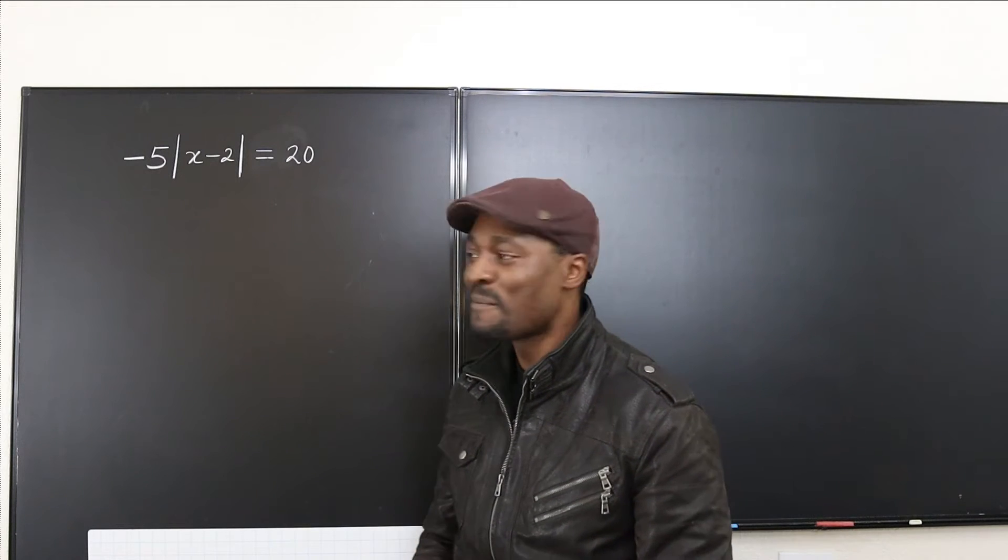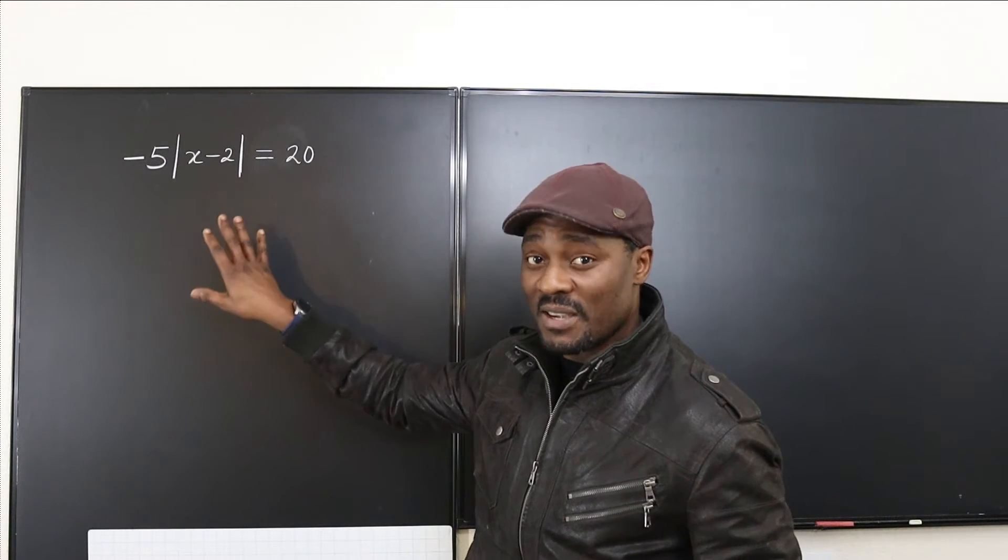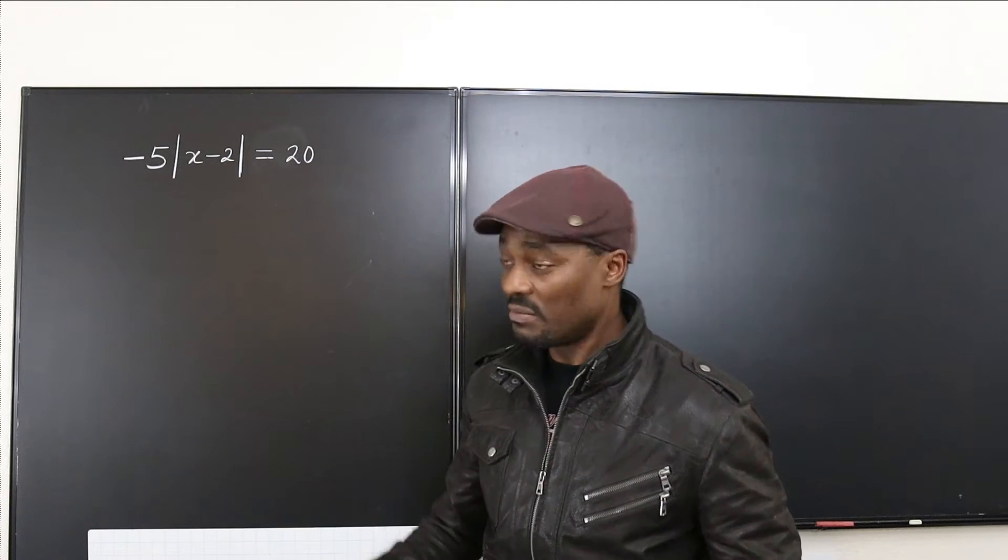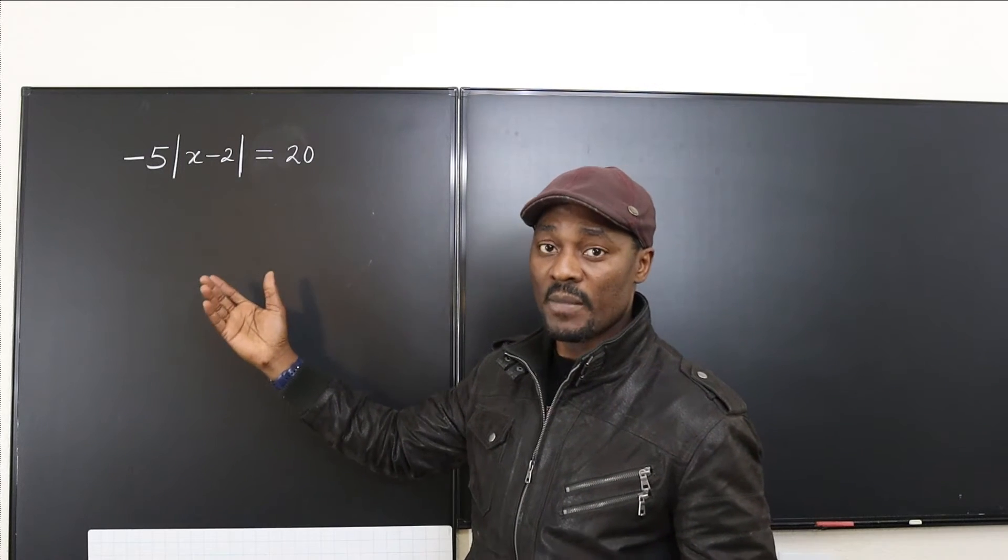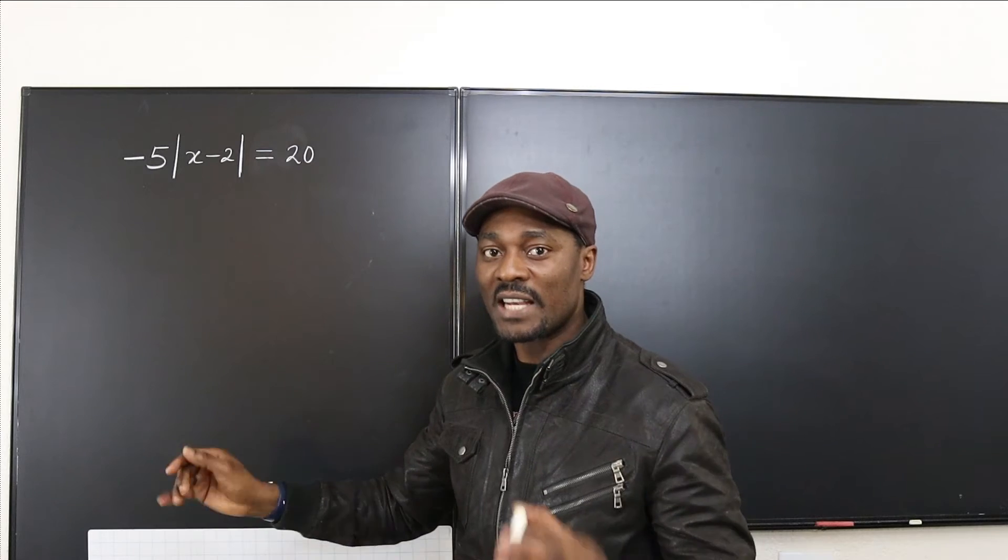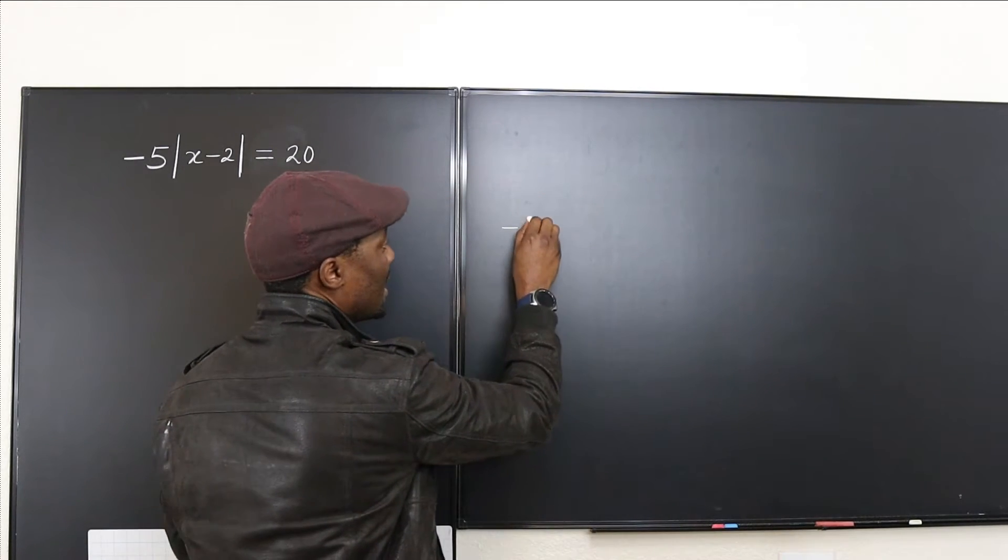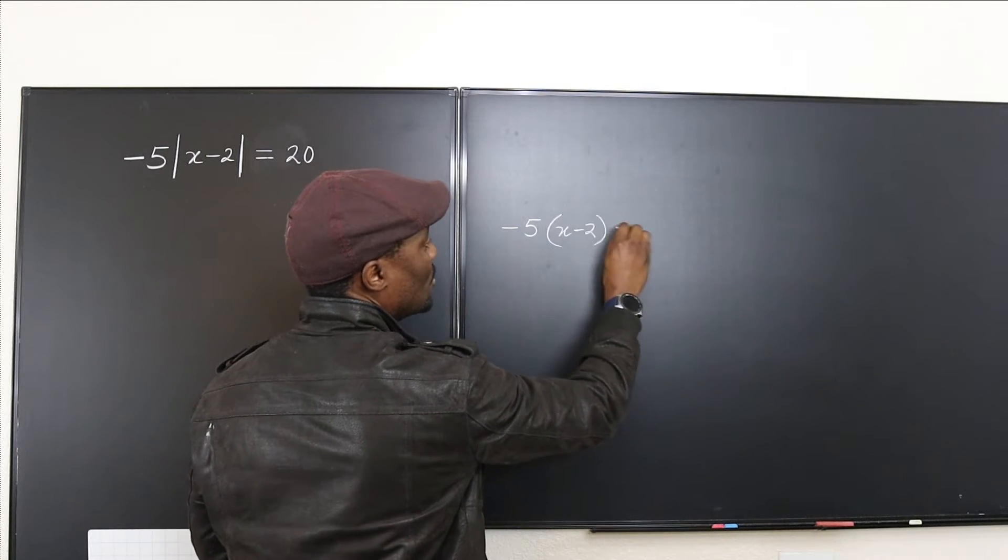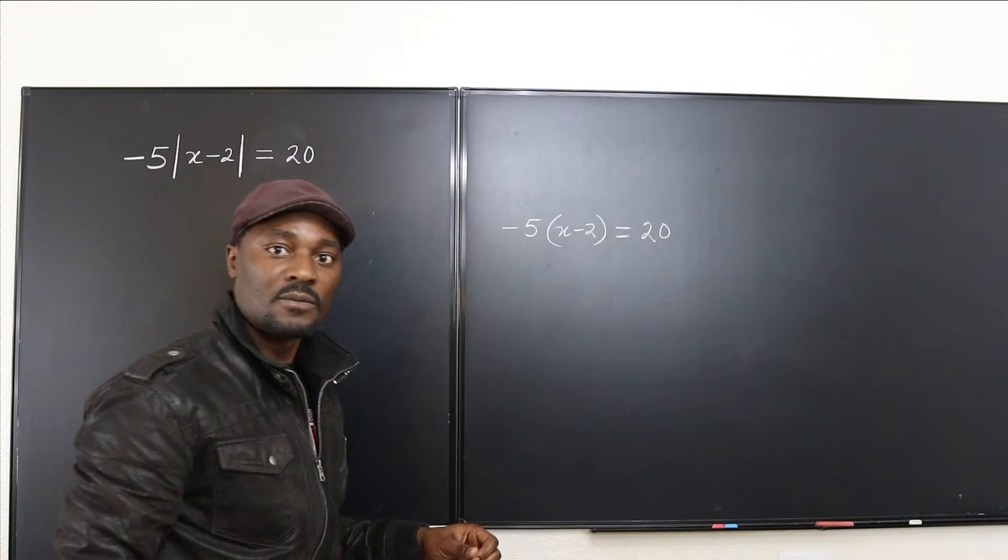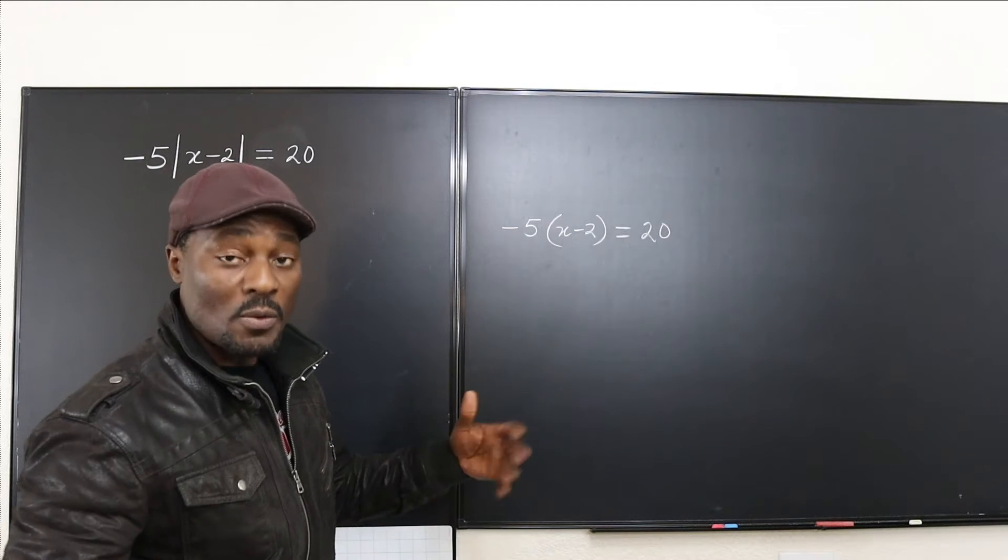Now let's get into this. This is a little different from just solving an equation because this is an absolute value problem. Let me show you an alternative. Let's say this question was written like this: negative 5 times (x minus 2) equals 20. You know that one way you could